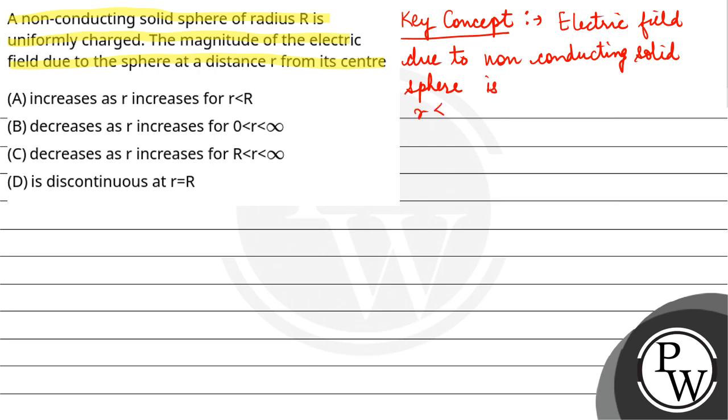For distance r less than radius, means inside, we have E equals 1 over 4πε₀ times q over R³ times r. And for r greater than radius, means outside, E equals 1 over 4πε₀ times q over r².